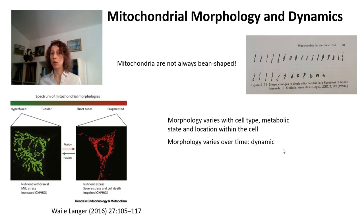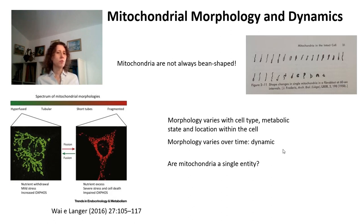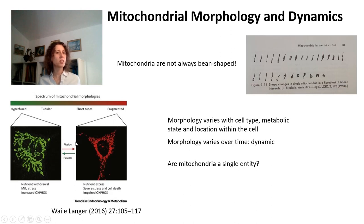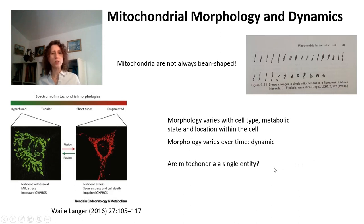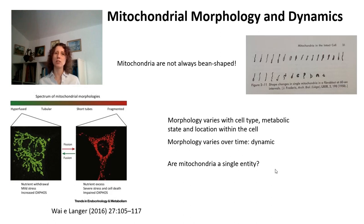This leads to the question of whether mitochondria are actually a single entity. When we look at a picture of mitochondria within a cell at one specific point, we're tempted to count them as separate entities. But if over time they're always exchanging material and changing size and shape, maybe they're a single entity. In fact, there are cells in which there is one single mitochondrial reticulum, such as cardiomyocytes. And in most cells, over time, most of the mitochondrial mass will exchange components with the rest of the mitochondrial network, so in a sense they can act as a single entity.